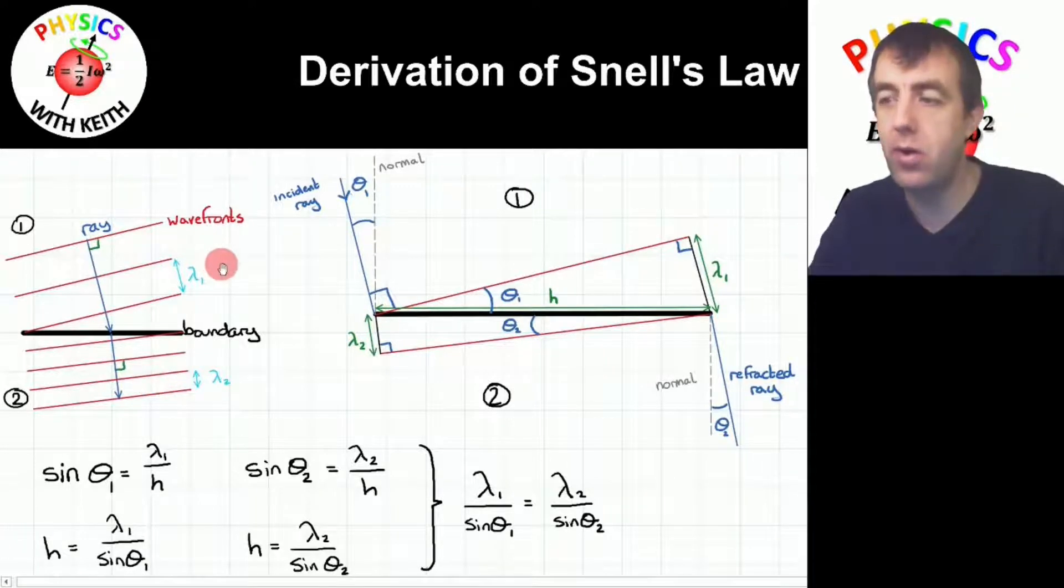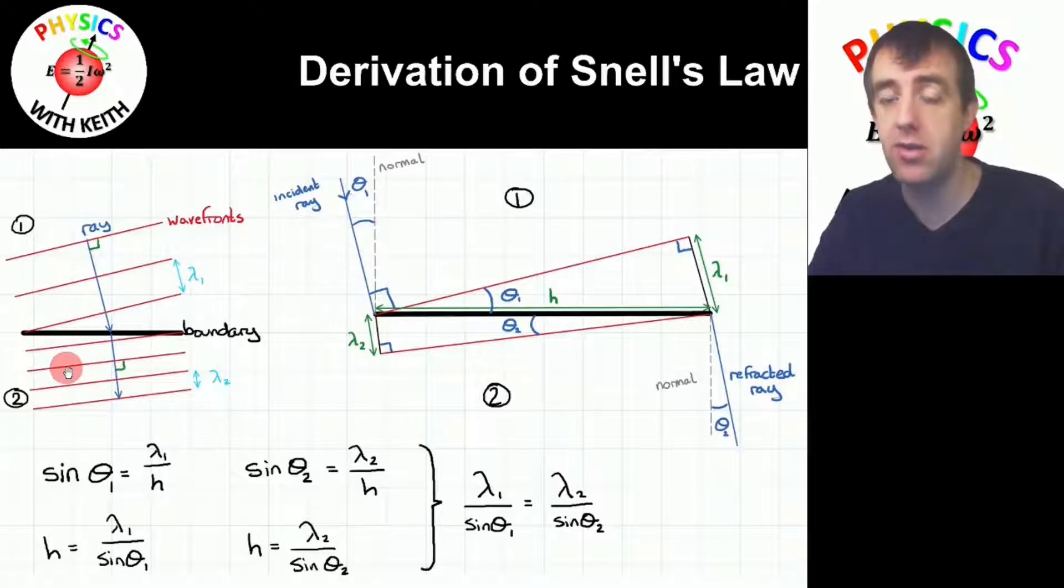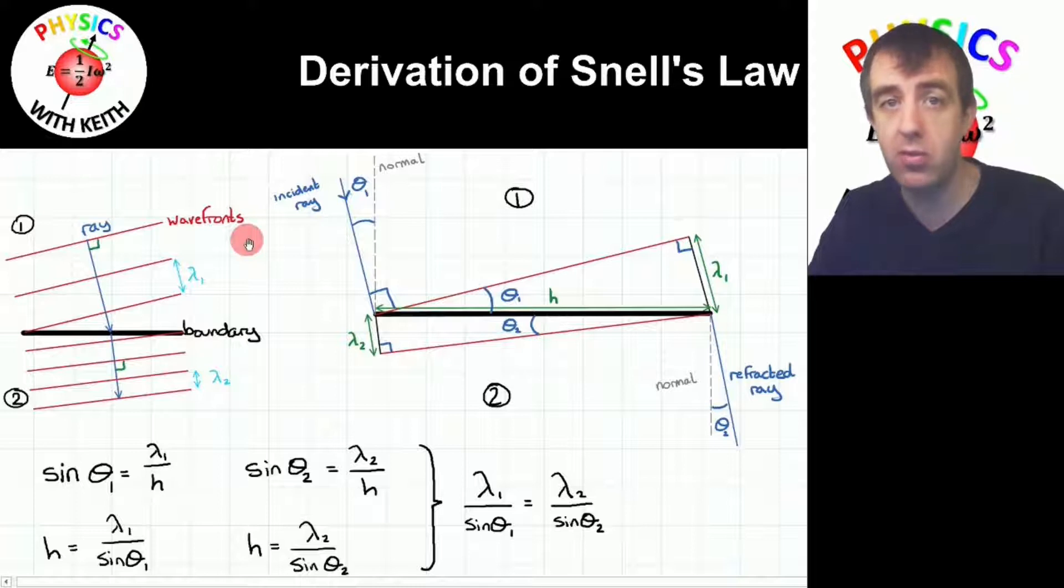As we saw before, the distance between two wavefronts is equal to one wavelength. Now, I've labeled one medium, medium one, and I've labeled the other medium, medium two. So I'm considering this from an optical point of view. Refraction does happen in other wave systems, but we're going to consider it purely from an optical point of view.